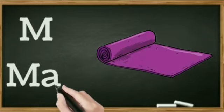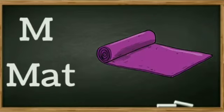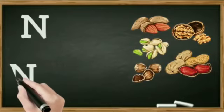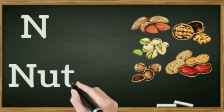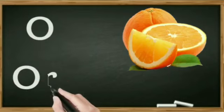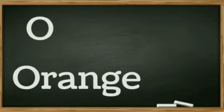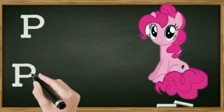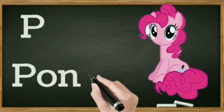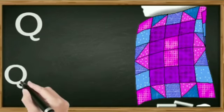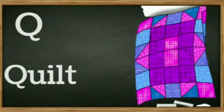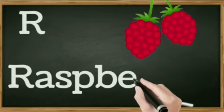M for mat. N for nuts. O for orange. P for pony. Q for quilt. R for raspberry.